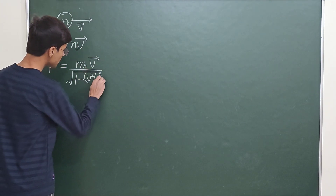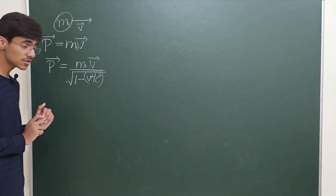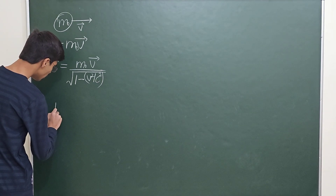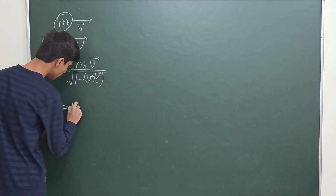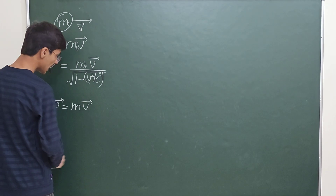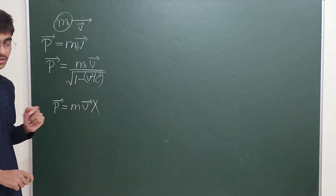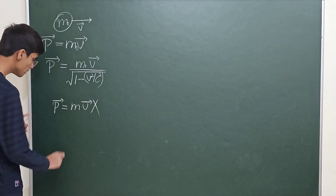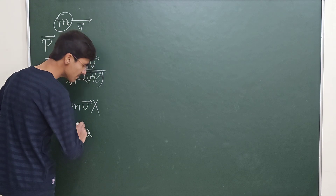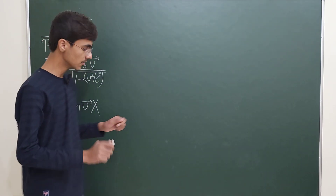The real trouble comes in quantum physics. You cannot write that the momentum of an electron is the mass of the electron times the velocity vector of the electron. That is not possible to write — and this is the reason you also cannot write F = ma with any modification for an electron.